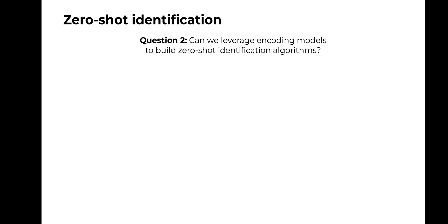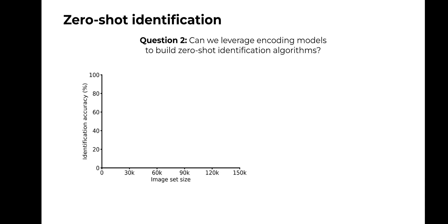Next, with the second computational modeling analysis, we addressed the following question: can we leverage the prediction accuracy of our encoding models to build zero-shot identification algorithms? Zero-shot identification algorithms are algorithms that identify the image conditions subjects were viewing directly from their brain responses, without ever being trained on those image conditions, which is relevant for instance in the engineering of brain-computer interface technology. Jumping to the results, the y-axis indicates the identification accuracy, whereas the x-axis indicates the amount of possible alternative image conditions against which the true image condition was tested. For example, an accuracy of 40% with an image set size of 30,000 images indicates that the algorithm correctly identified 40% of image conditions among 30,000 possible alternatives.